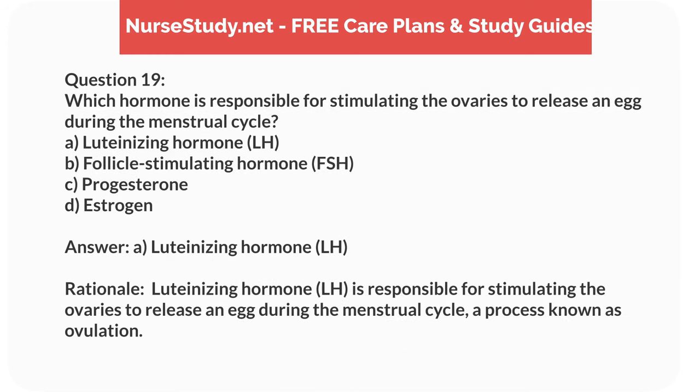Answer: A. Luteinizing hormone (LH). Rationale: Luteinizing hormone (LH) is responsible for stimulating the ovaries to release an egg during the menstrual cycle, a process known as ovulation.